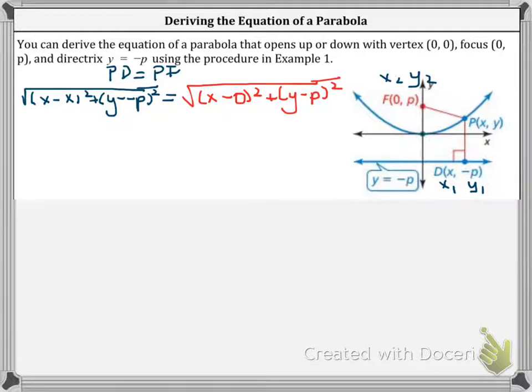So we will simplify. We know that the X minus X squared cancels. And so what we're left with is square root of Y plus P squared equals the square root of X squared plus Y minus P squared.